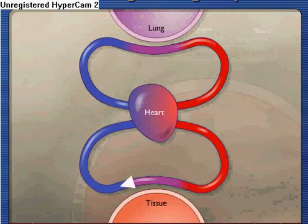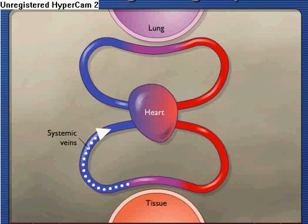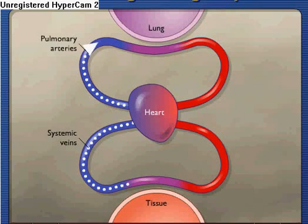Oxygen-poor blood is carried through systemic veins back to the heart and is pumped through pulmonary arteries to the lungs, where gas exchange again replenishes the blood with oxygen and removes carbon dioxide.